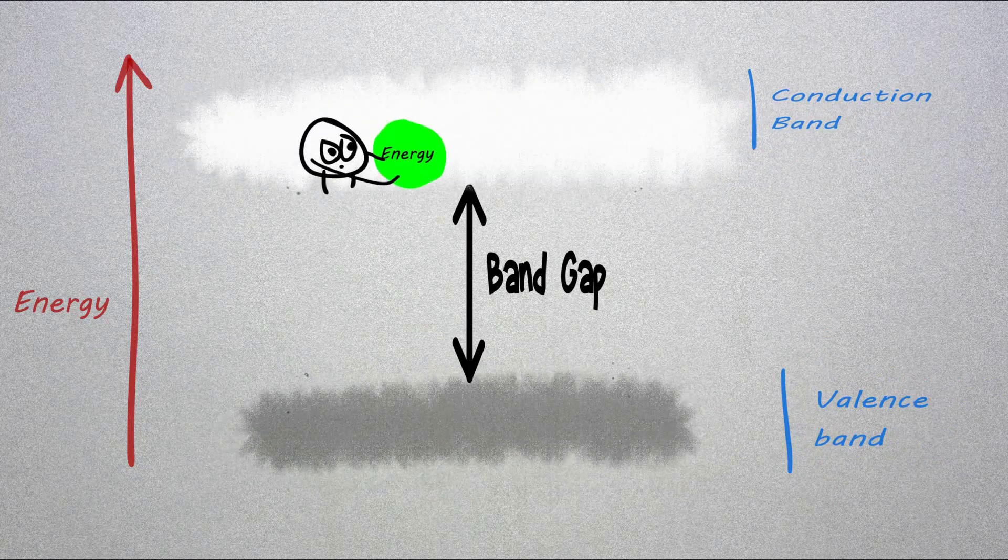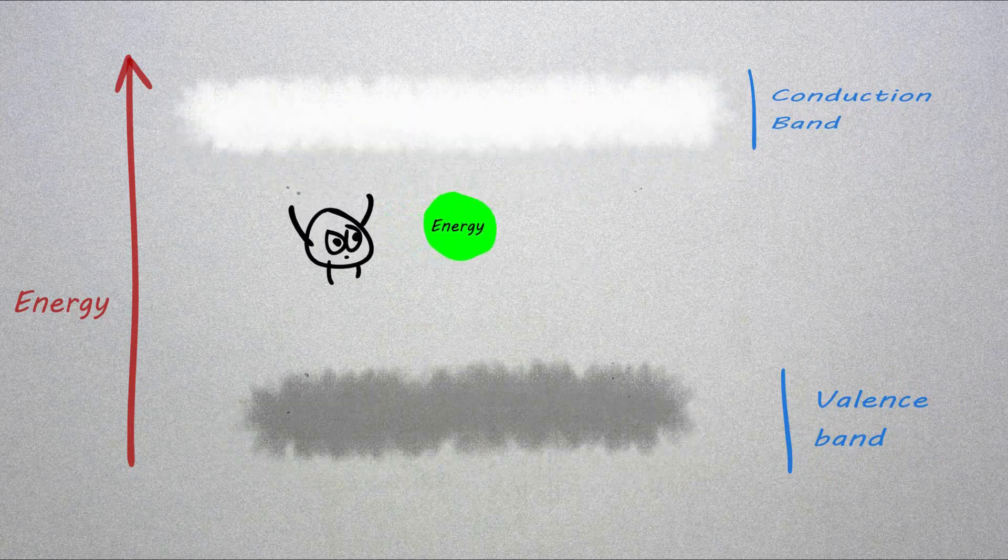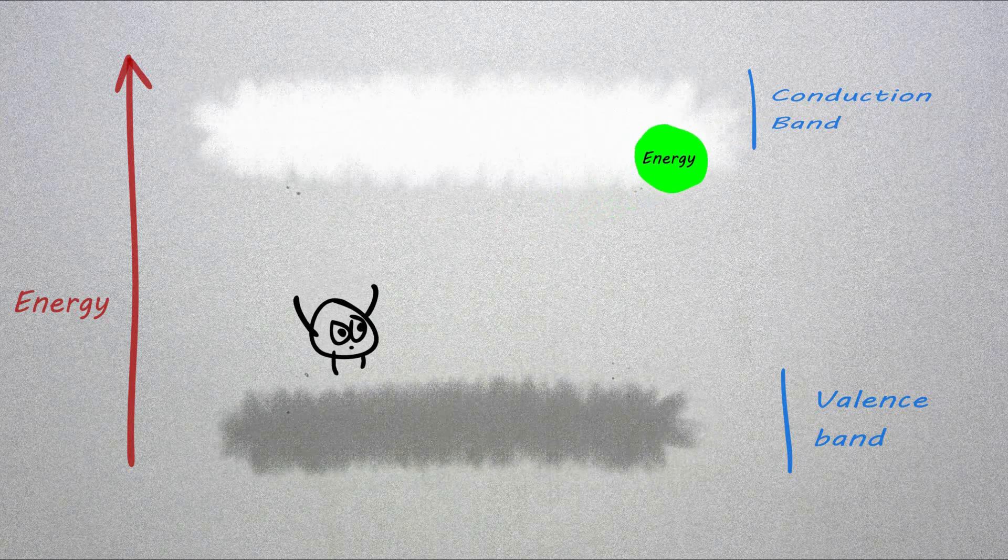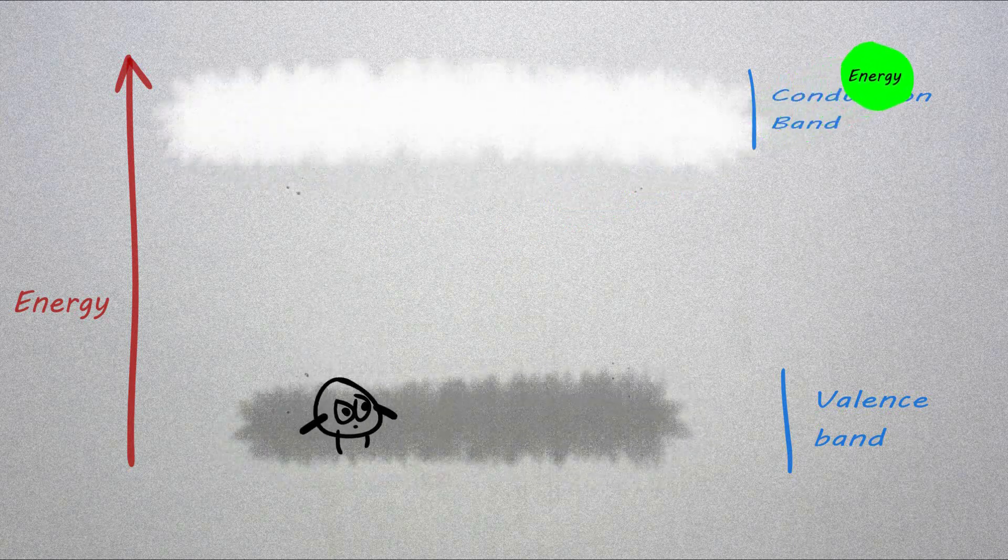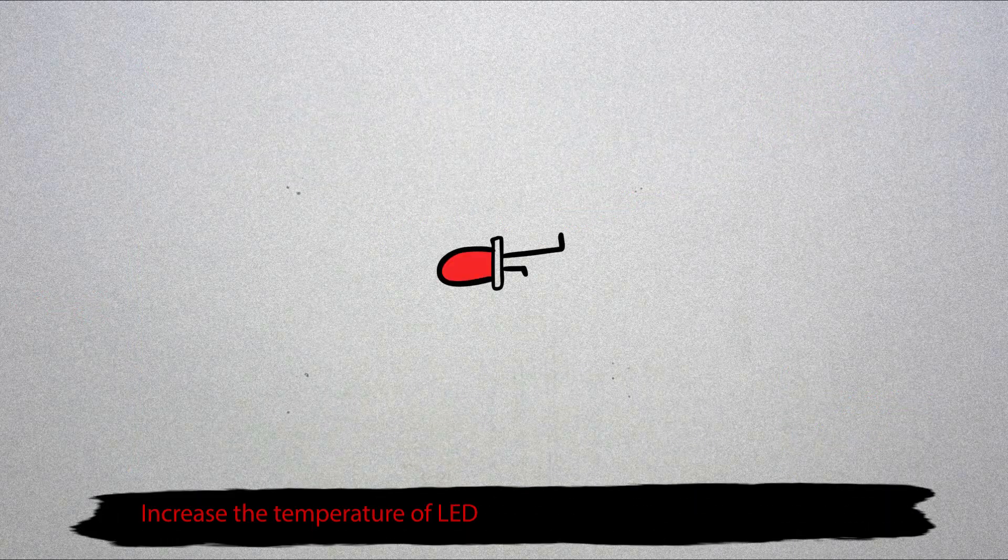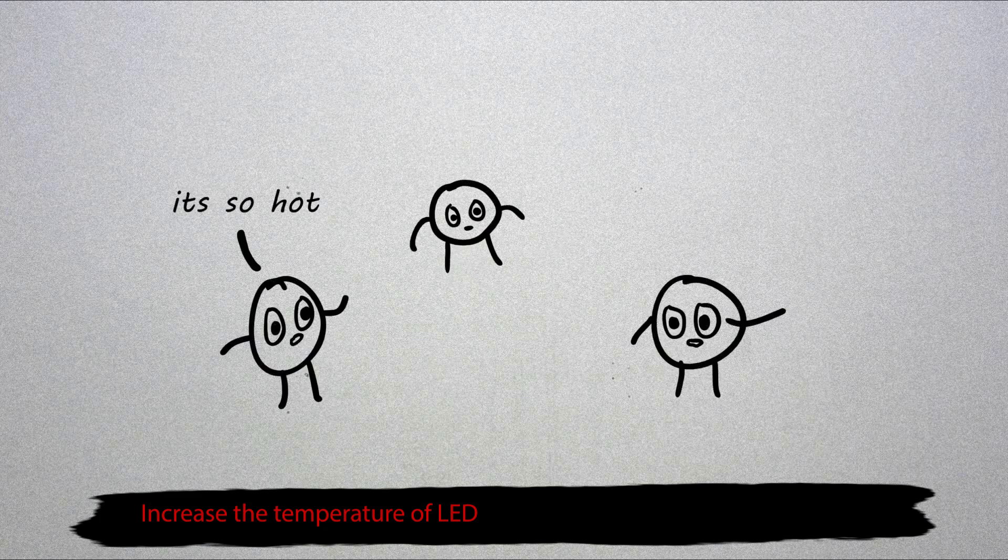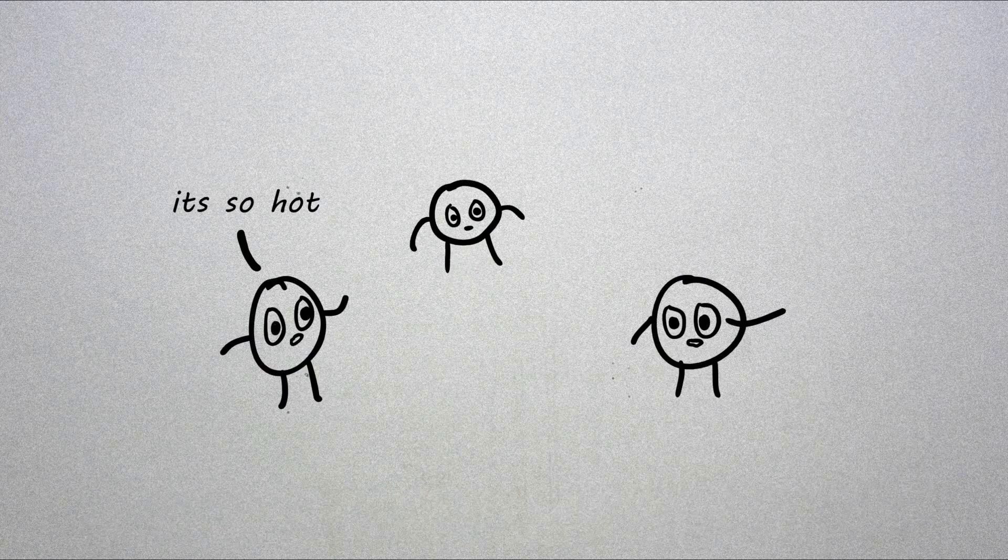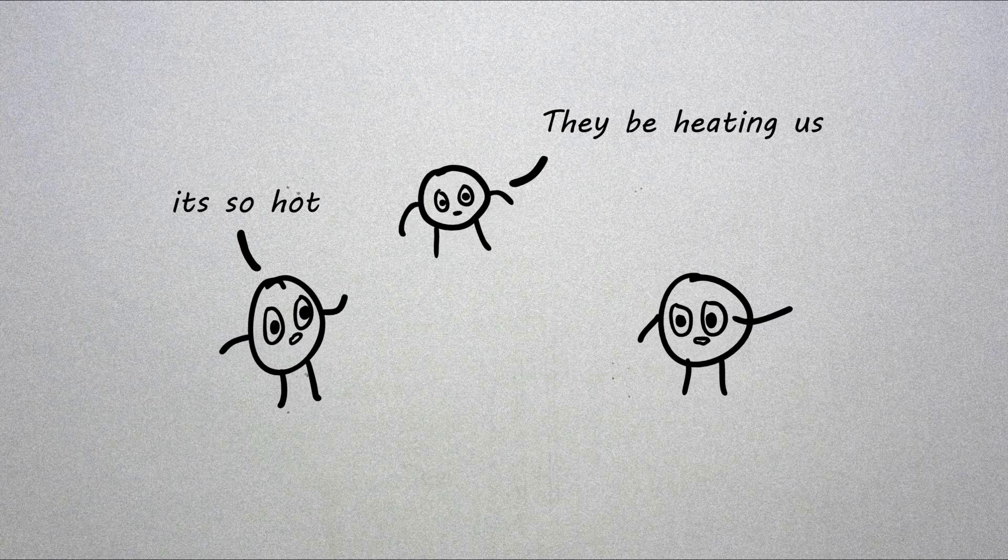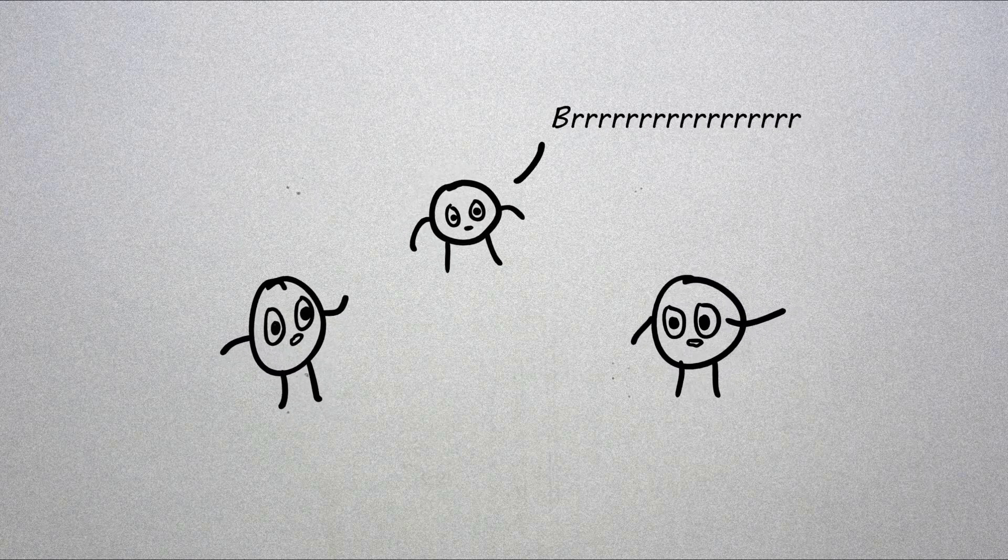So as the temperature of LEDs increases, it makes the atoms inside the semiconductor go mad and they all start to vibrate. And when those atoms vibrate more, it will increase the interatomic distance and so increases the lattice constant.